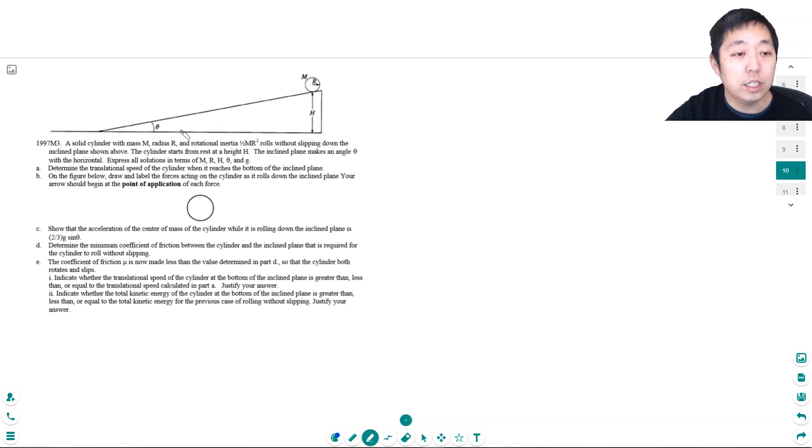A solid cylinder with mass m, radius r, and rotational inertia one half mr squared rolls without slipping down the inclined plane as shown above. The cylinder starts from rest at a height h. The inclined plane makes an angle theta with respect to the horizontal. Express all your solutions in terms of these variables.